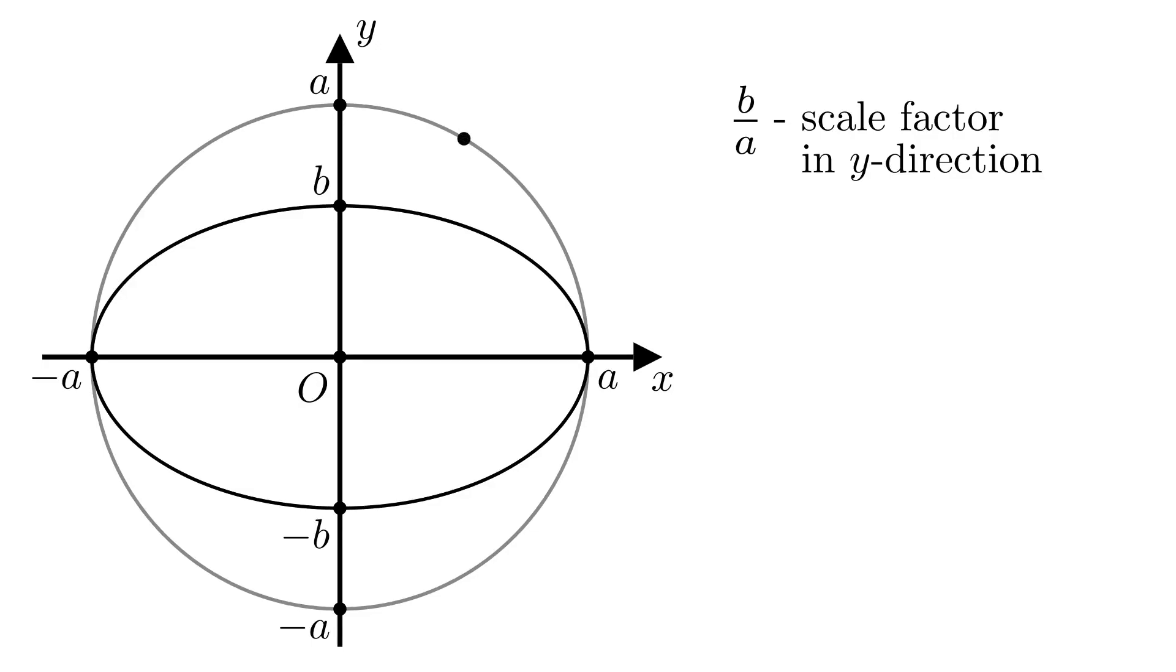Let's look at a point on the circle and its x and y coordinates. When we shrink the circle in the y-direction, the x-coordinate doesn't change, but the y-coordinate is multiplied by the scale factor.